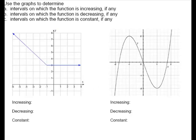We'll use two graphs to answer three questions. For this first graph, there are no increasing intervals — it is going down and then staying constant. Decreasing: it has an arrow on the end, so it's coming from negative infinity to negative one. Then it is staying the same and goes forever, so constant is from negative one to infinity.